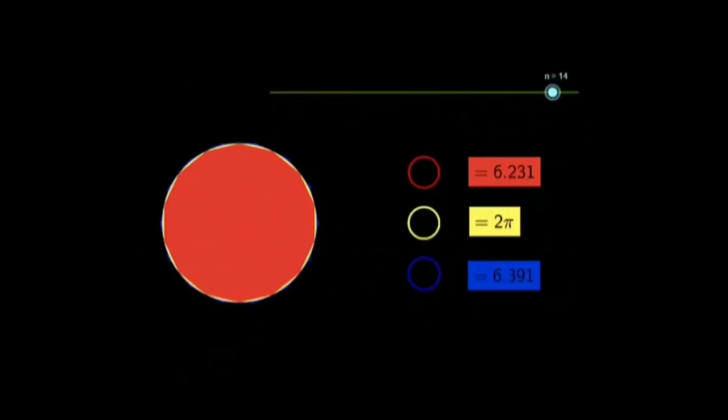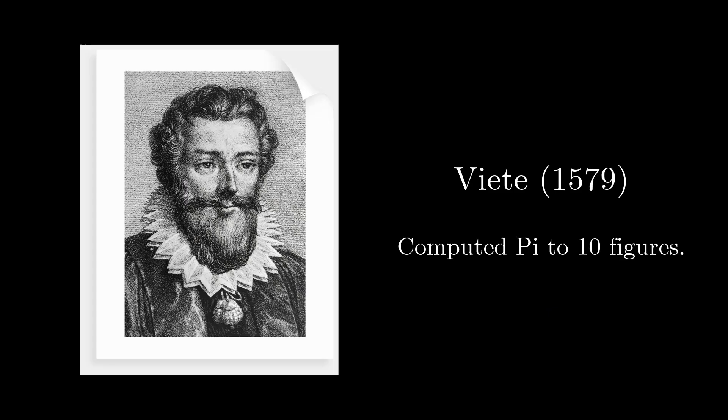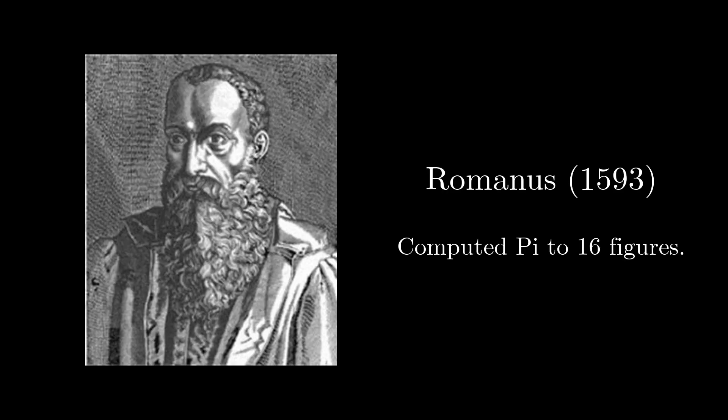The ancient method of approximating the circle by polygons was employed, and by 1579 Viet had computed the value of pi to 10 figures. In 1593 Romanus gave its value to 16 figures.